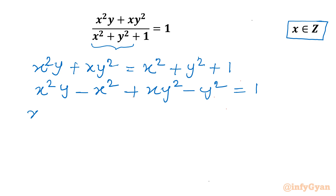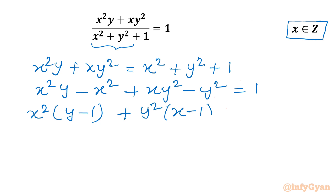Now x² is common here — I will write (y - 1) in the bracket — and y² is common here, so I need to write (x - 1) in the bracket. The right-hand side is 1.